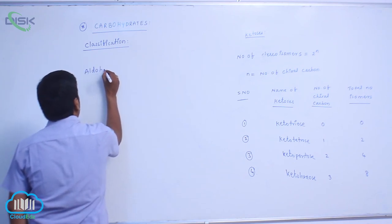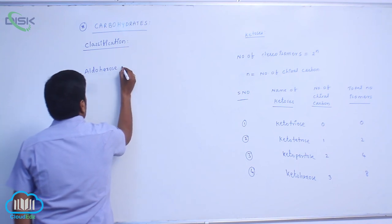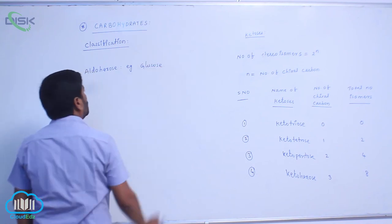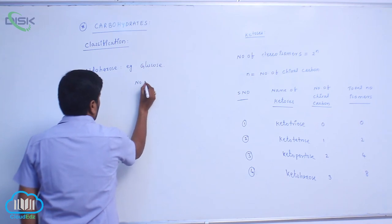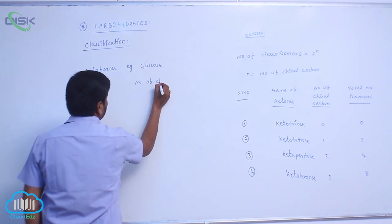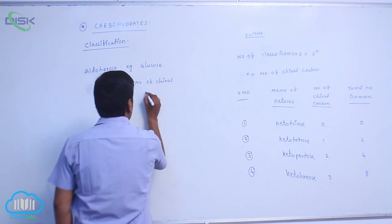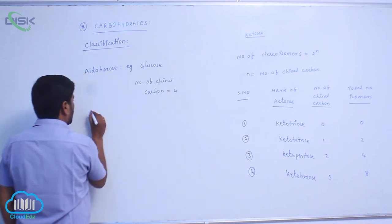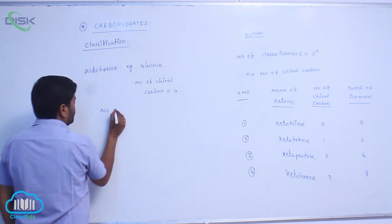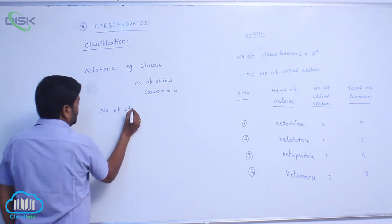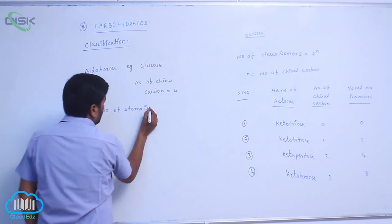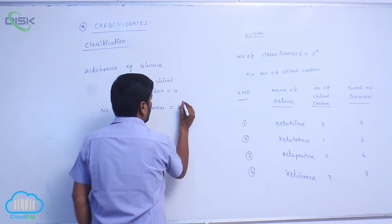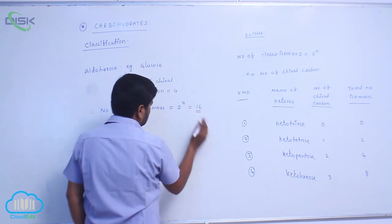For aldohexose, the example is glucose. The number of chiral carbons equals 4, so the number of stereoisomers equals 2 to the power 4, giving 16 isomers.